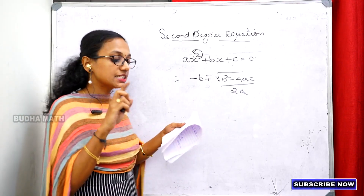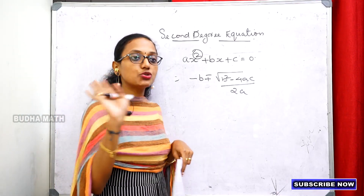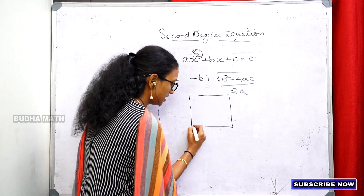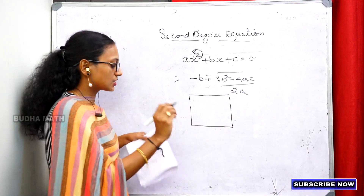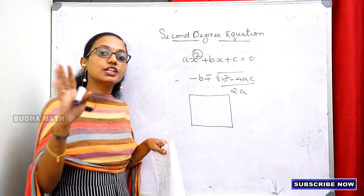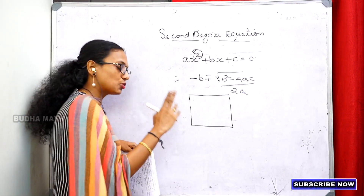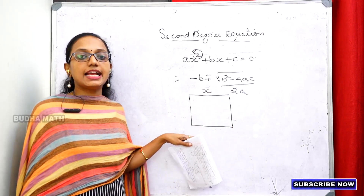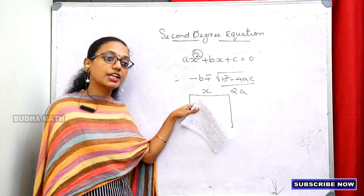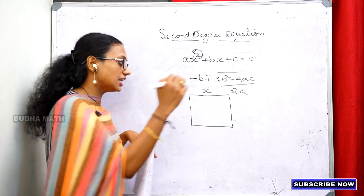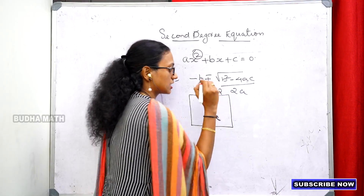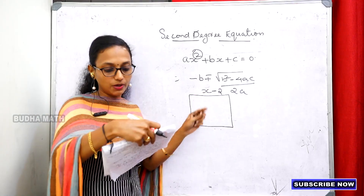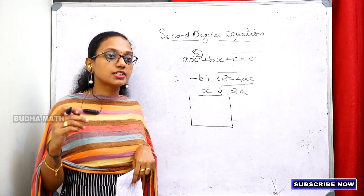Let's set up the second degree equation. We have a square — this side of the square is reduced by 2 meters. If we call the original side x meters, then the reduced side is x minus 2, and the area is 49.